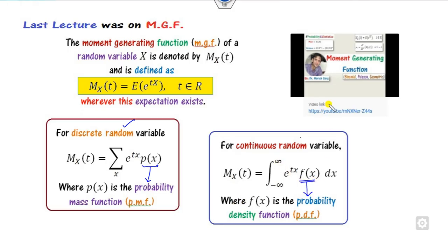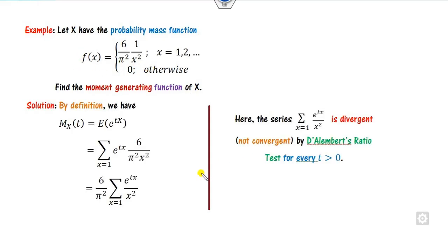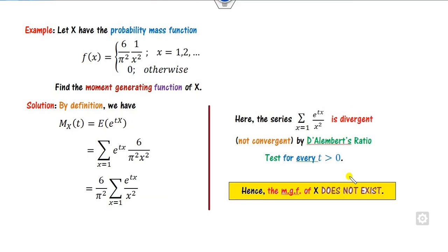If X is continuous, we integrate from minus infinity to plus infinity using the PDF. We also saw that the moment generating function may or may not exist for all distributions. For example, if you consider a certain function f(x) and try to find the MGF, the final expression is a divergent series — meaning the MGF does not exist.